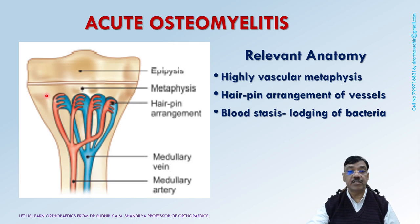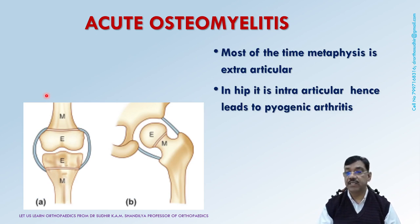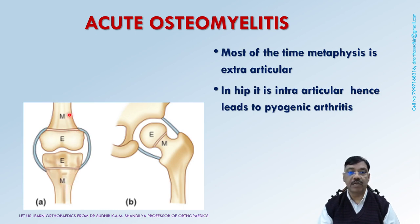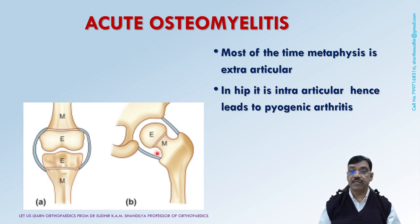Thus, the metaphysis is a common site for osteomyelitis. In most joints, the capsule is attached at the junction of the epiphysis and metaphysis. As you can see, the metaphysis most of the time remains extra-capsular or extra-articular. However, in some joints like the hip joint and the shoulder joint, part of the metaphysis is intra-articular, so that infection from the metaphysis can spread directly to the joint, resulting in pyogenic arthritis.